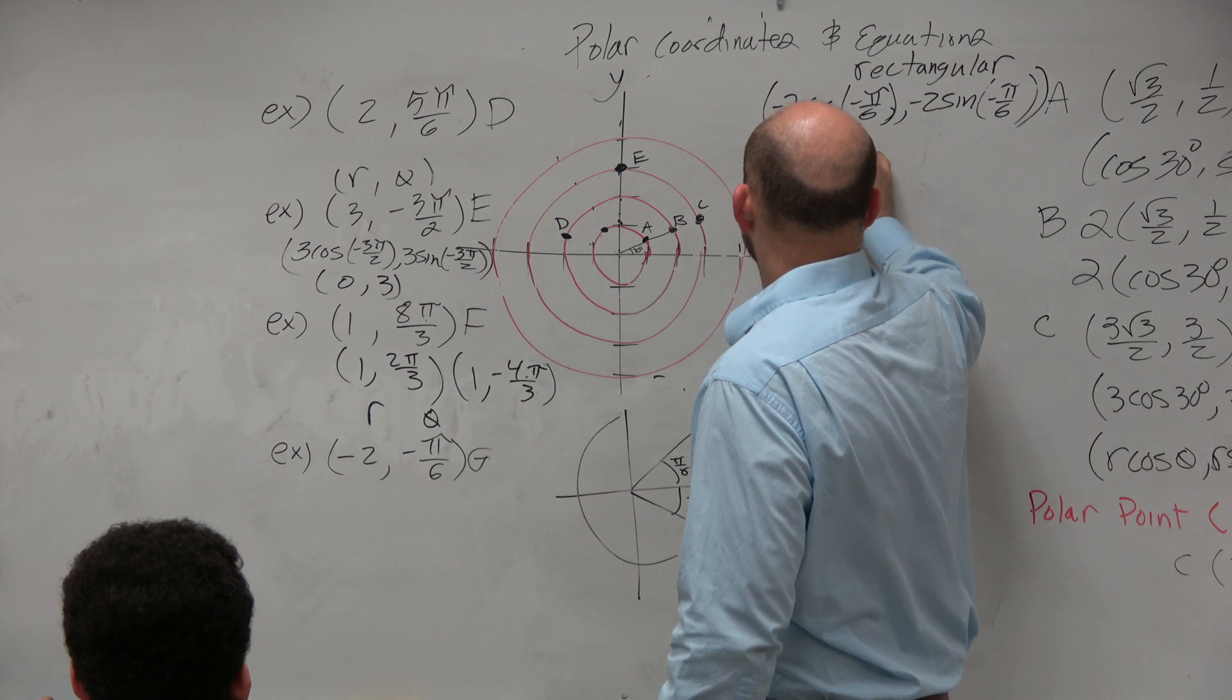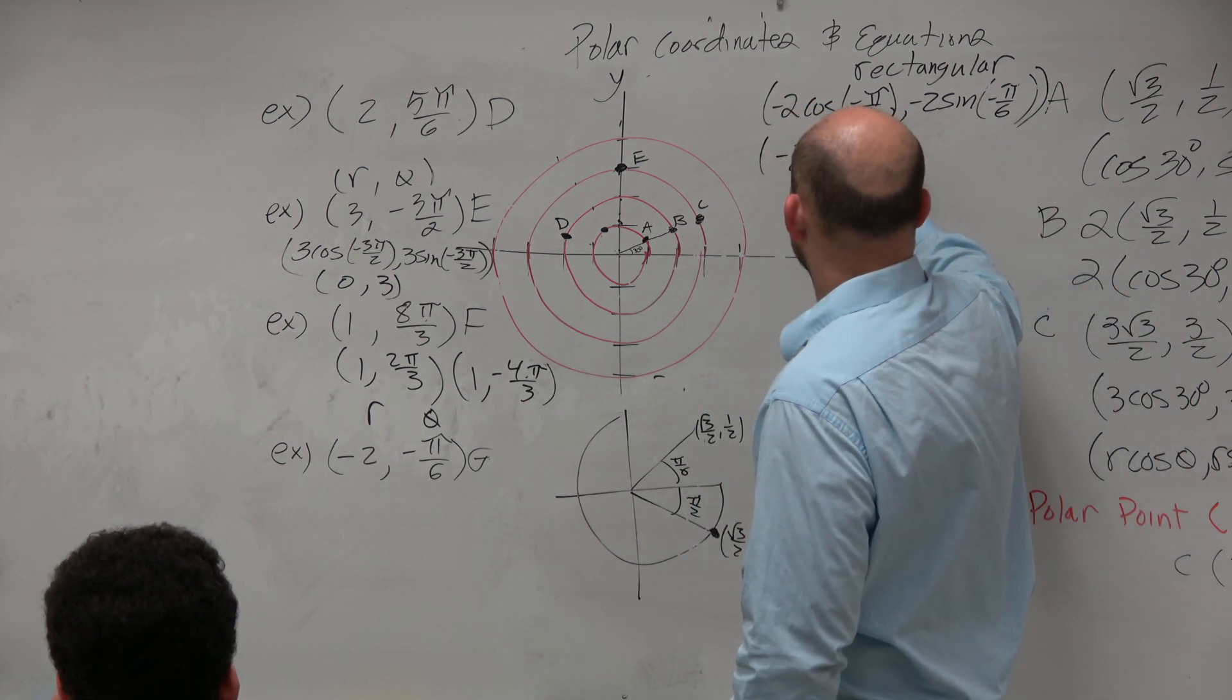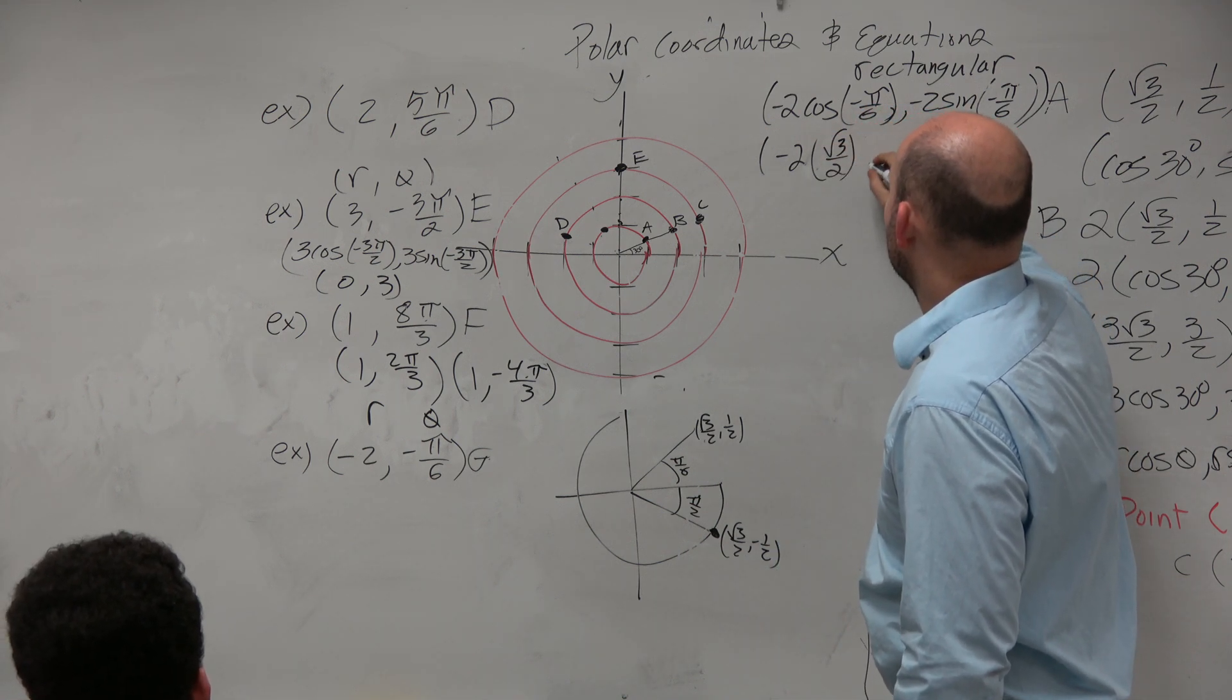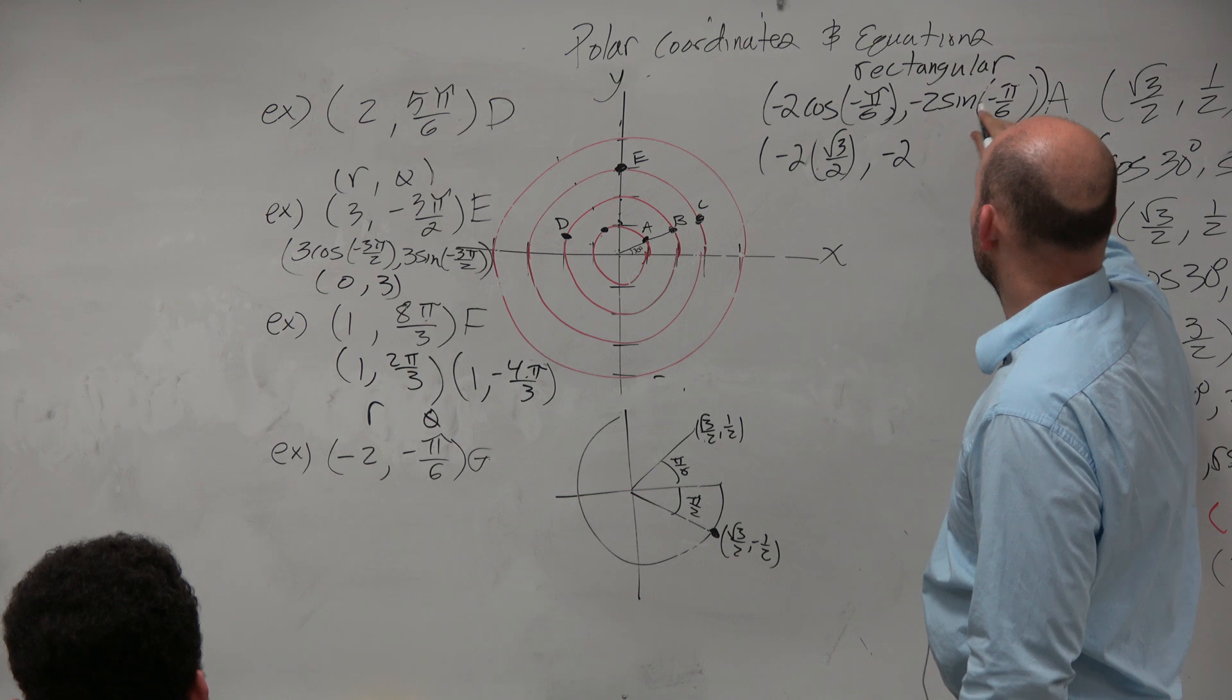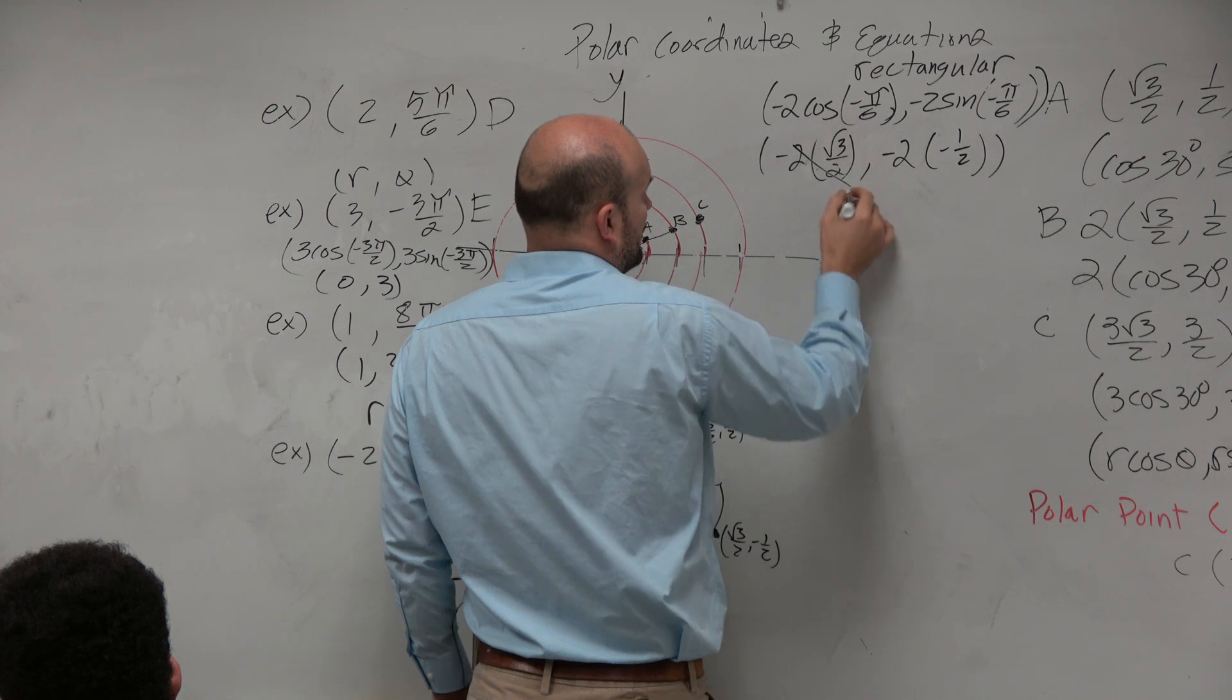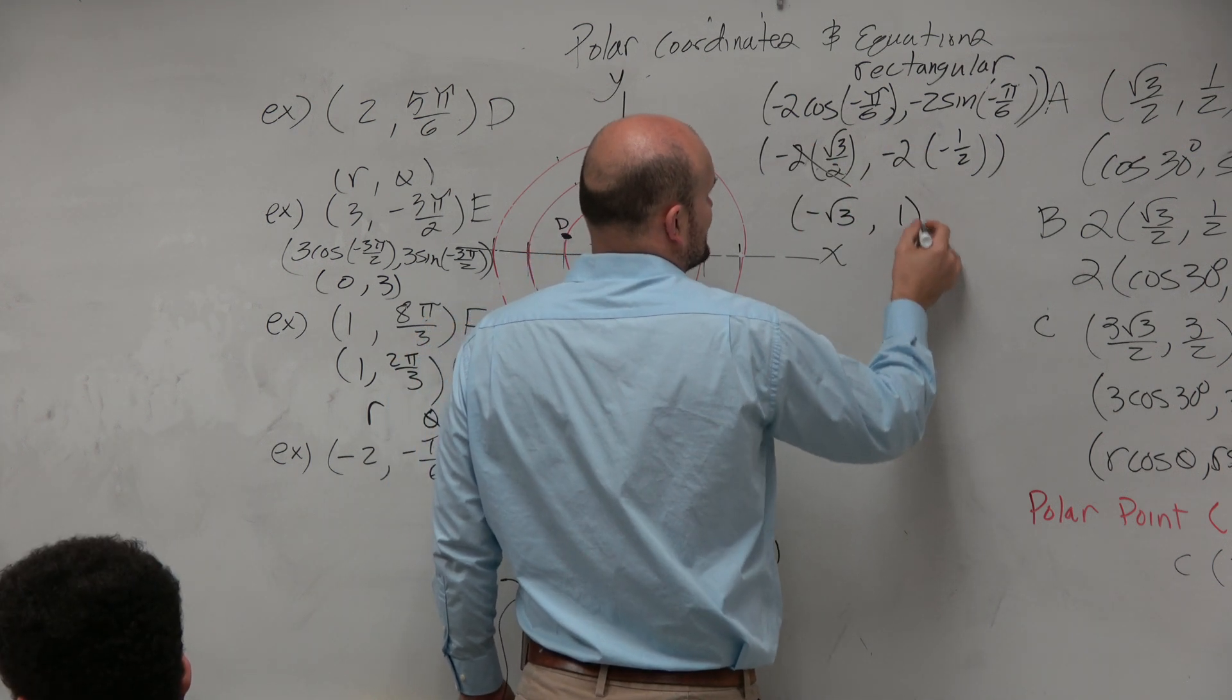So really, I'm doing negative 2 times cosine of negative pi over 6, which is square root of 3 over 2, comma negative 2 times sine, which is negative 1 half. So therefore, I get negative square root of 3 comma positive 1.